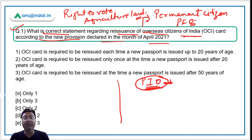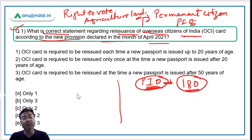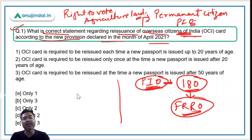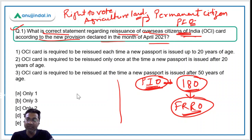The key difference between OCI cardholders and PIOs is that a PIO visiting India can stay for a maximum of 180 days, after which he or she must register at FRRO — the Foreigner Regional Registration Office. This requirement does not apply if the person is an OCI cardholder. I hope the difference between OCI and PIO is now clear.